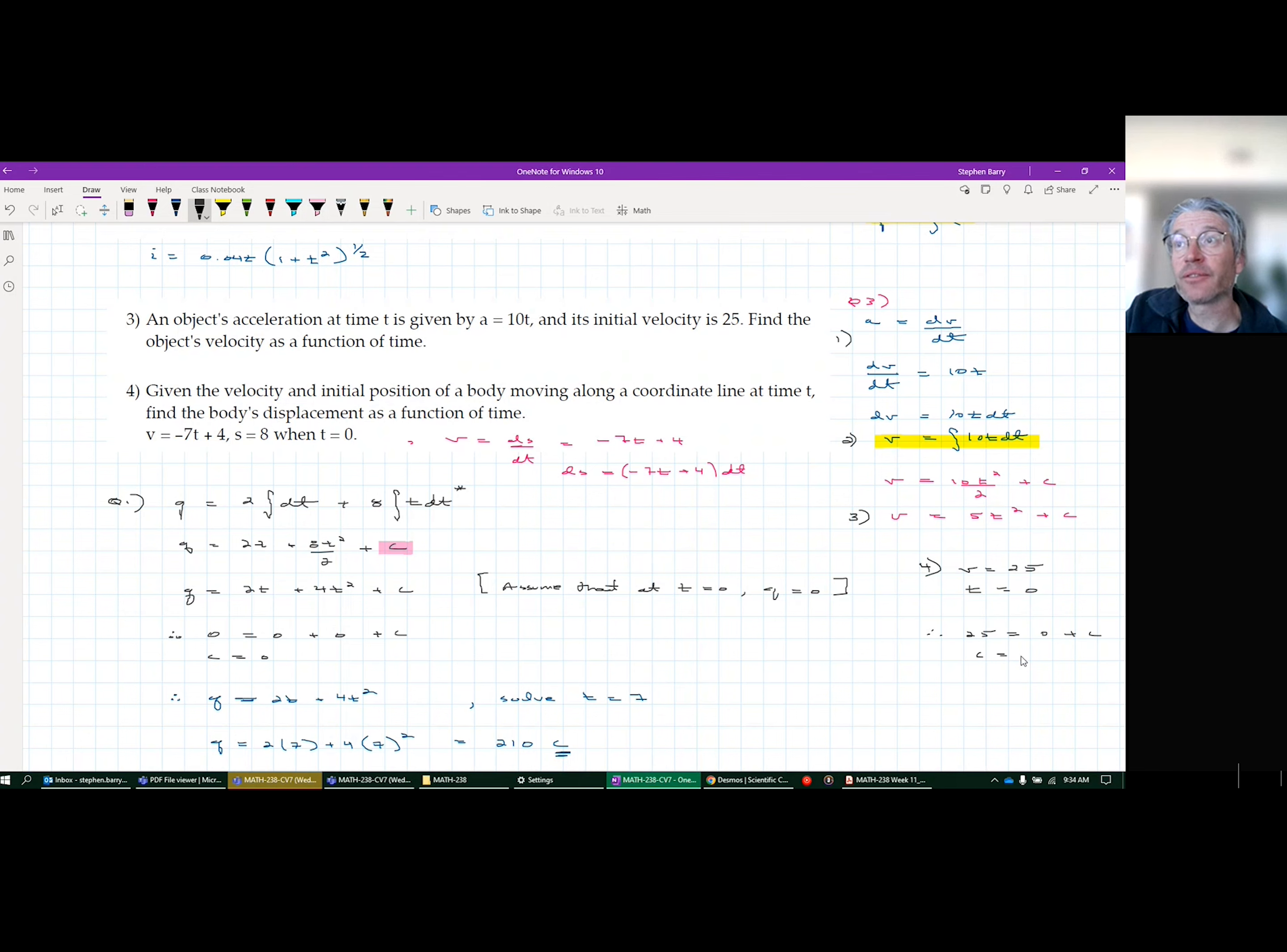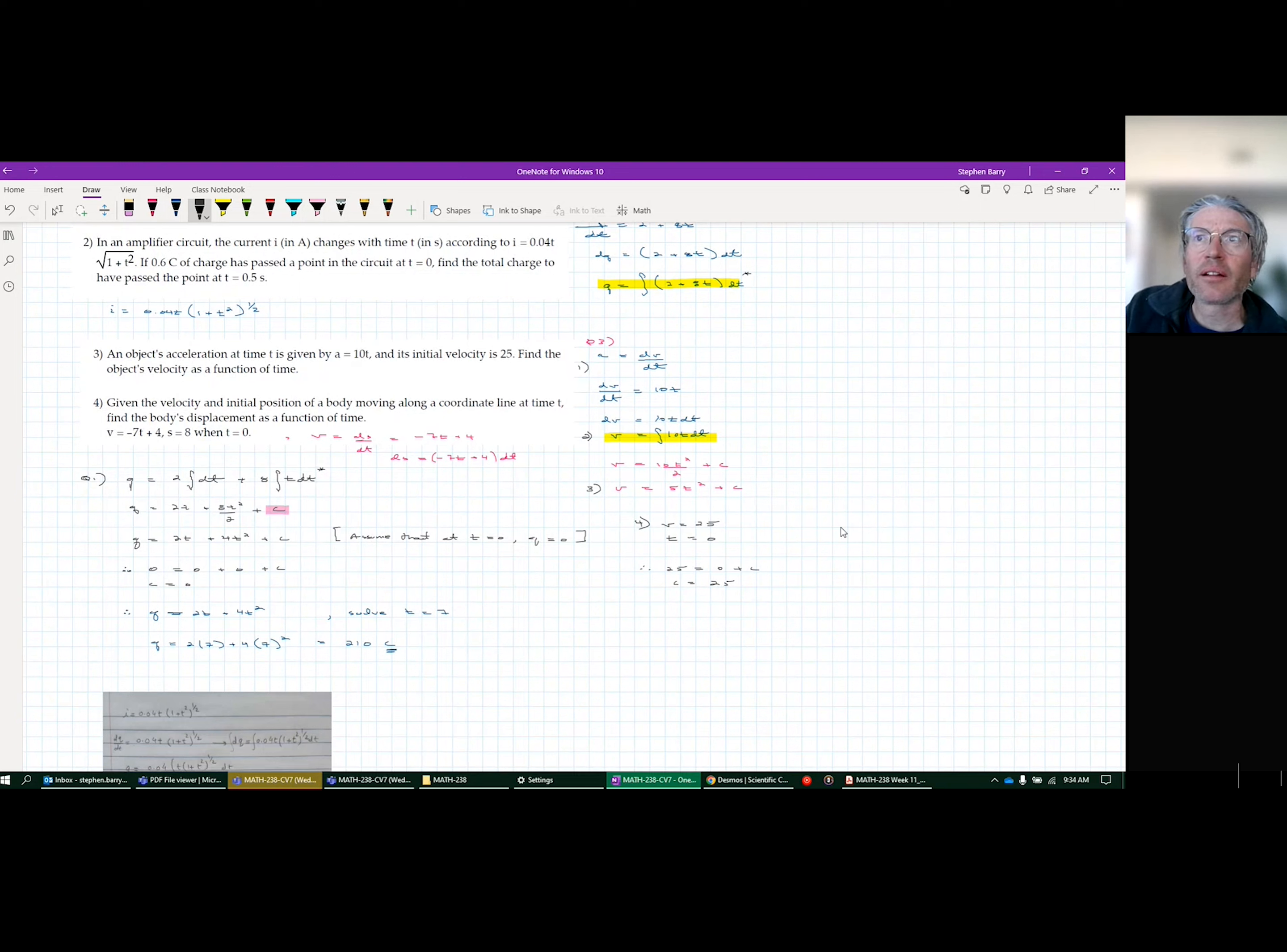C is 25. So maybe step five is basically the end. I know my equation therefore is V equals 5T squared plus 25. That's all we have to do. The question just says, find the object's velocity as a function of time. There we go. Done.